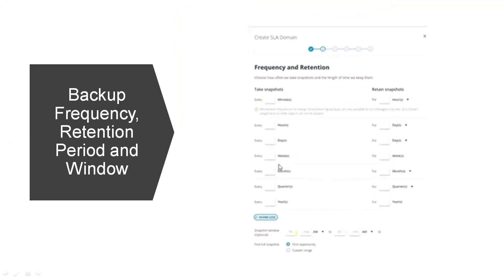There is a snapshot window which is optional. If we don't select a snapshot window, whenever we assign an SLA domain to an object, backup starts immediately. If we select a snapshot window, backup starts accordingly. There is also the option of first full snapshot, where we can customize the range — like when the first full backup should run, with a start time and end time — so that it won't run during business hours.